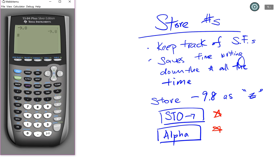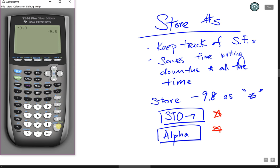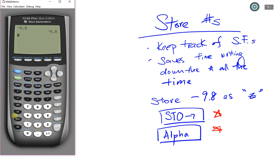I press negative 9.8, enter. I'm going to use the store function. We are going to press the STO button on our graphing calculator, which is located right over here. So I'm going to press STO, store.